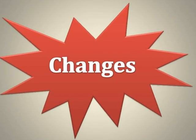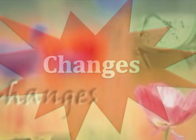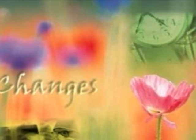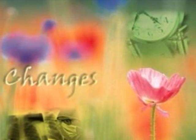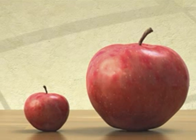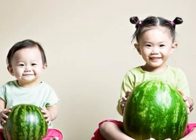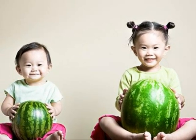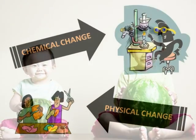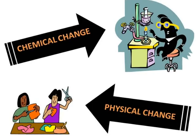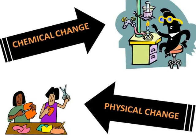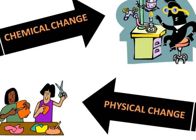Changes occur in our everyday life. Some are big or small. Some are short or even tall. Changes come in all sizes, shapes, and forms and can be categorized as a chemical change or a physical one.